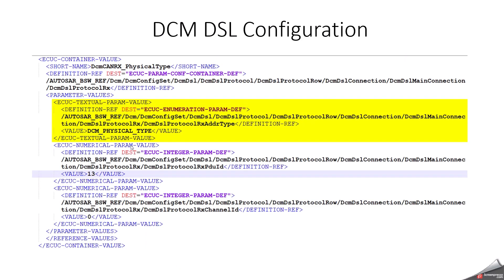This is the configuration step to configure physical addressing inside a project. This configuration will be done in the DSL layer. As you may already know, DCM has three sublayers: DSL, DSP, and DSD. The physical and functional addressing configuration will be done in DSL. Mainly it is taken care of by the configuration parameter DCM DSL Protocol Rx Address Type, which is configured under DCM DSL Protocol Rx.